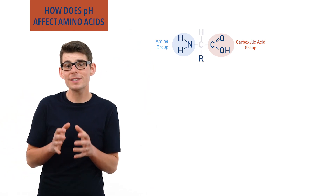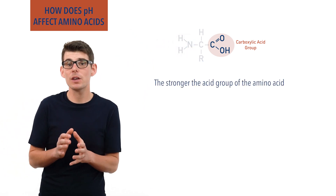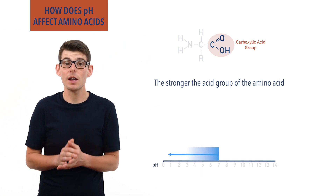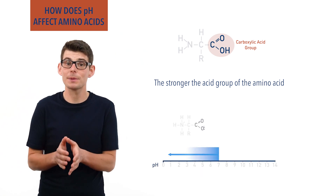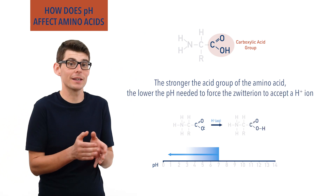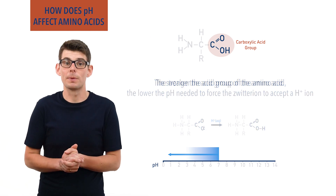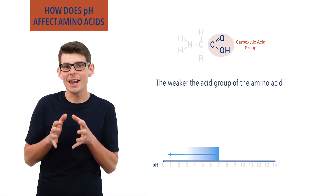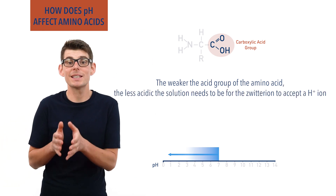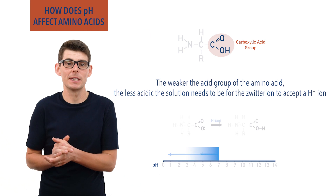The more acidic the acid group is, the lower the pH of the solution needs to be for the carboxylate ion to accept a H+ ion back again and reform the acid group. The weaker the acid group, however, the less acidic the solution needs to be, meaning it can accept a H+ ion at a slightly higher pH.